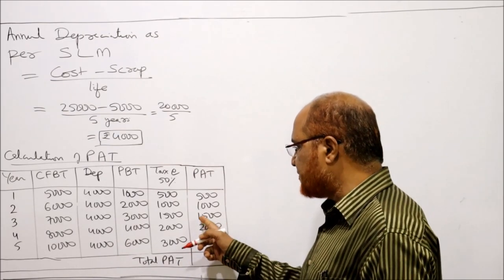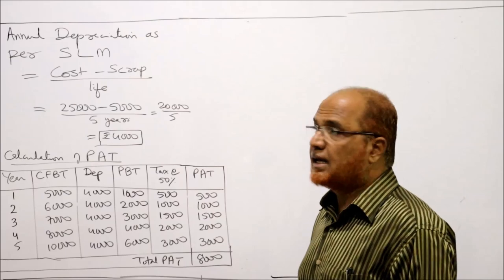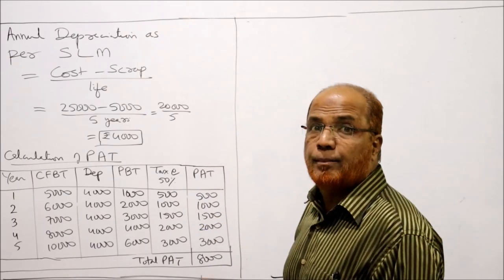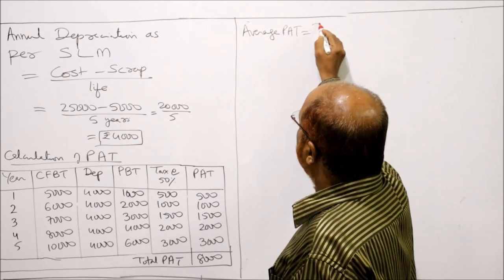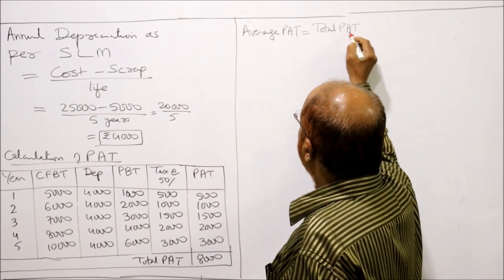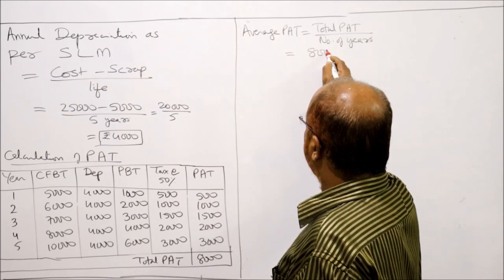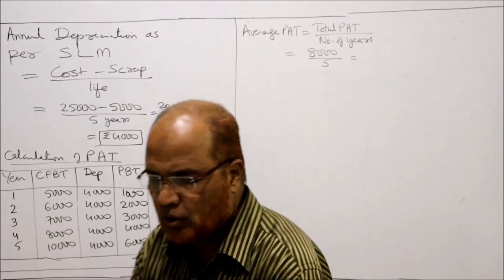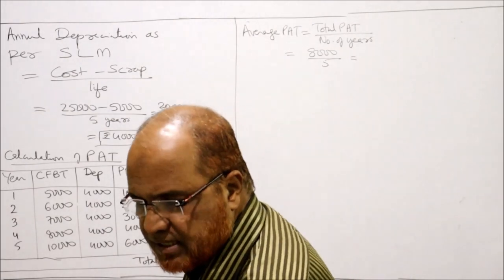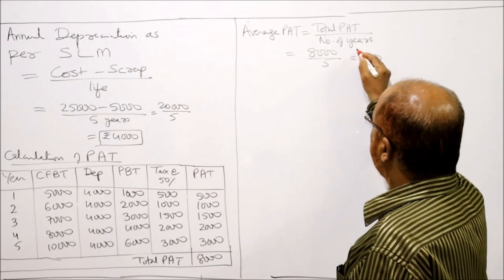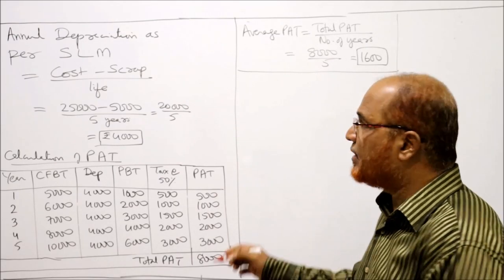The total PAT = 500 + 1,000 + 1,500 + 2,000 + 3,000 = Rs. 8,000. Average PAT = Total PAT / Number of Years = 8,000 / 5 = Rs. 1,600. Now we need to calculate average investment.